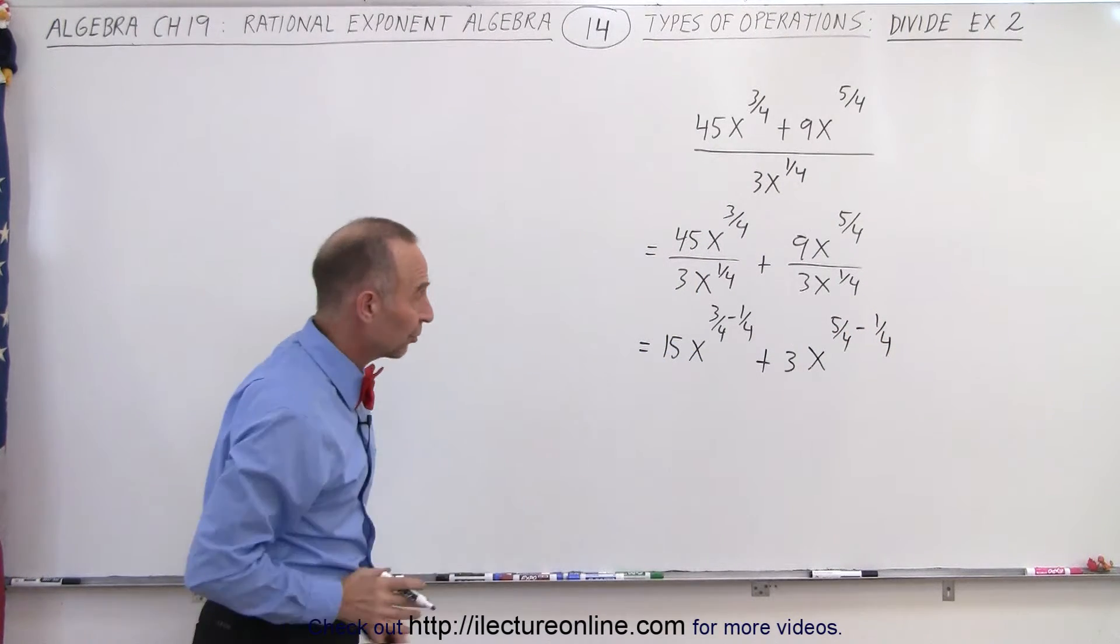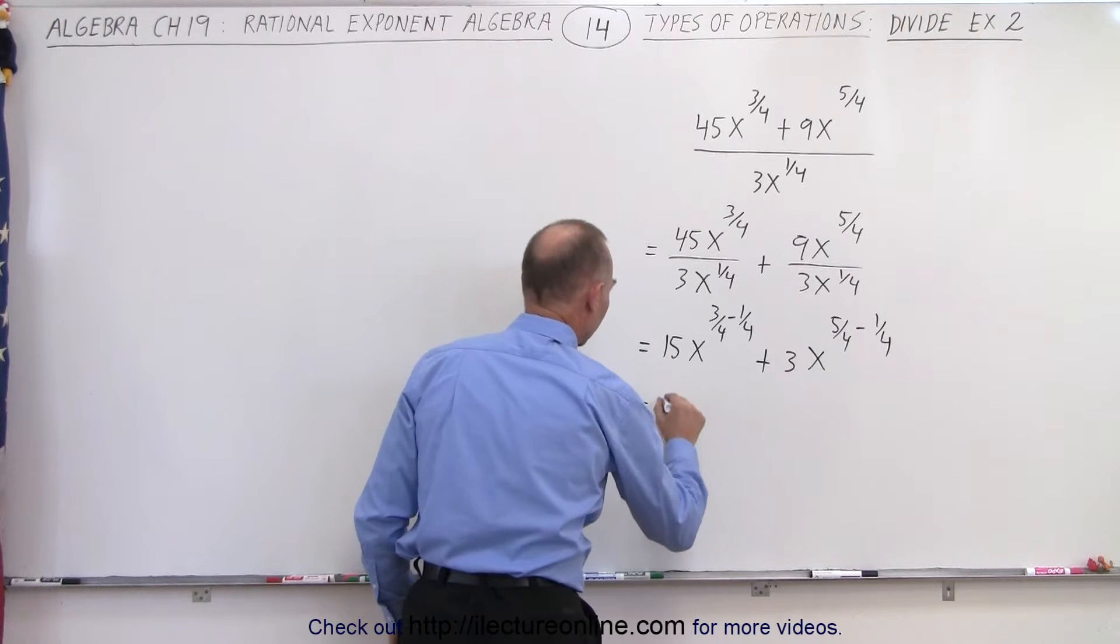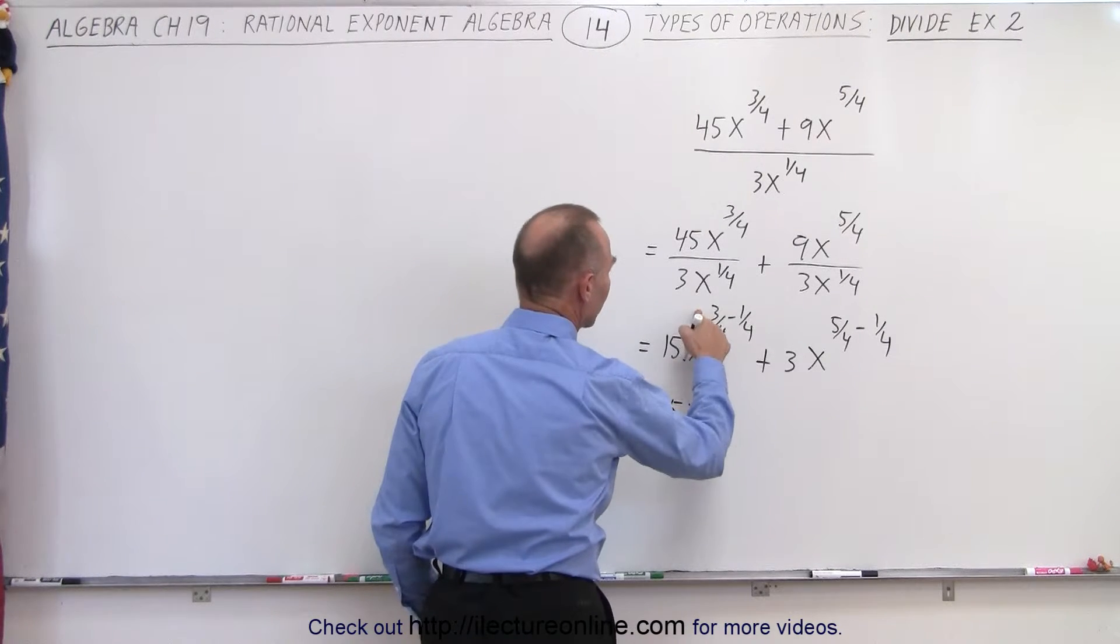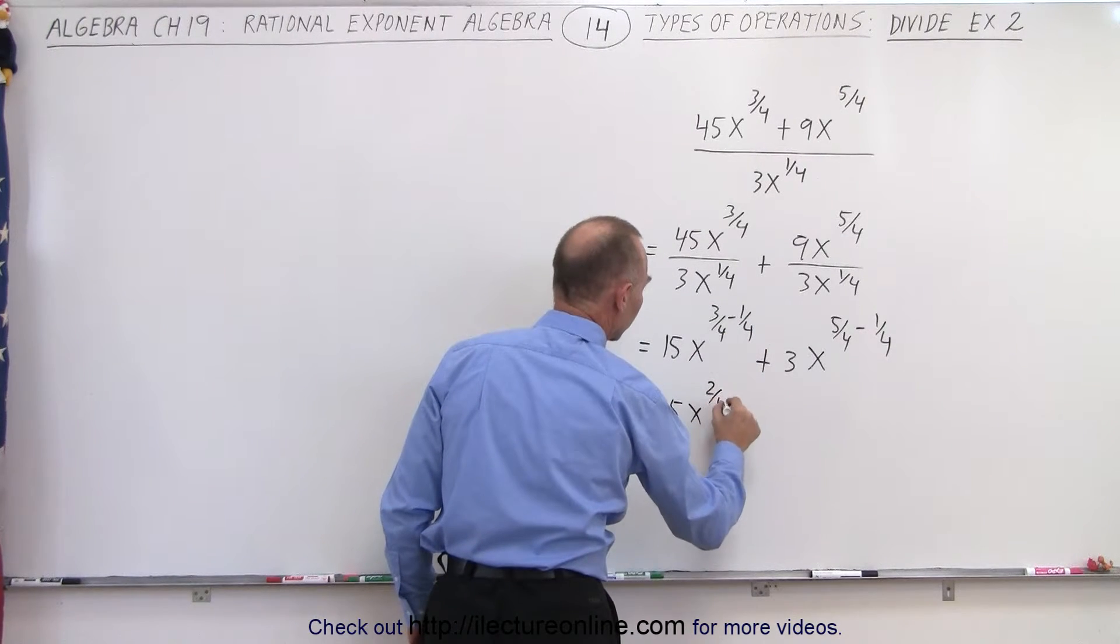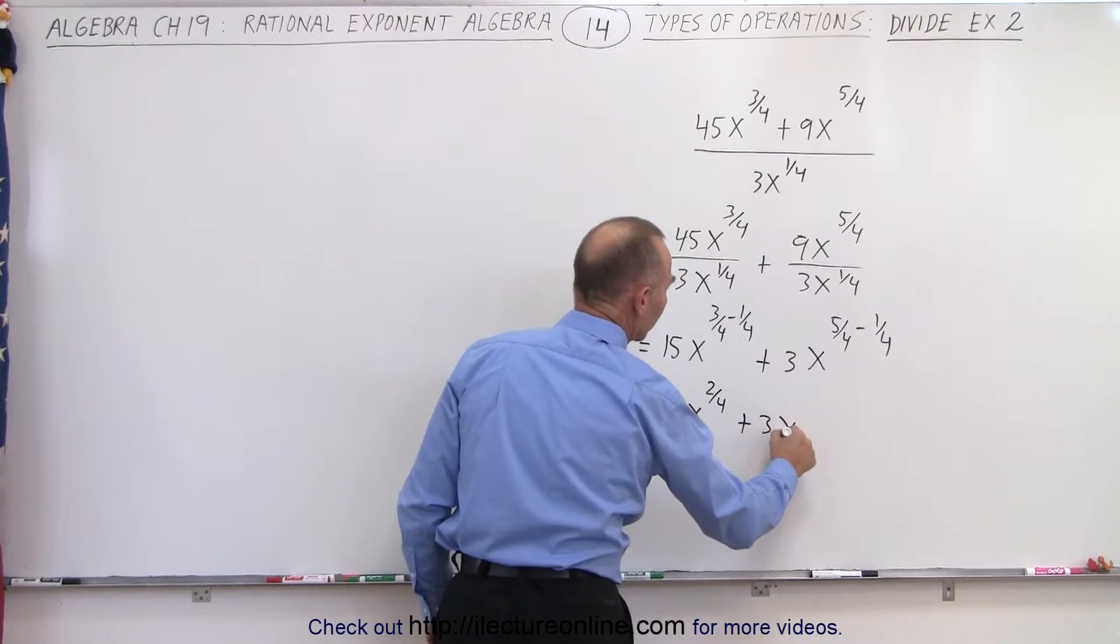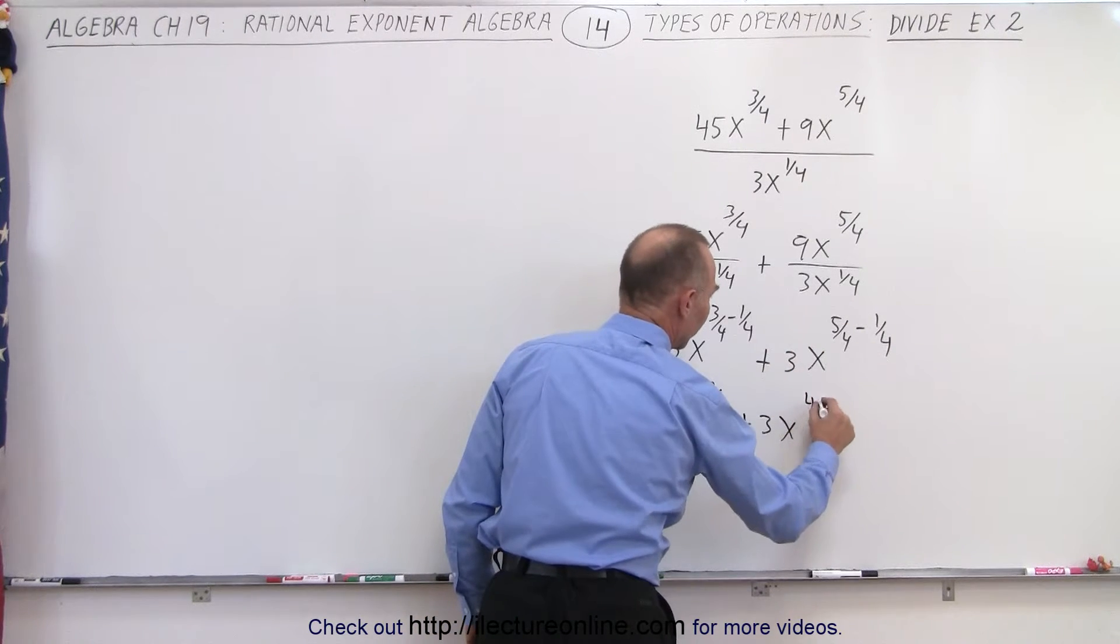Now we can go ahead and subtract those numbers. So this is equal to 15x to the 3 minus 1, which is 2 quarters, plus 3x to the 5 minus 1, which is 4 quarters.